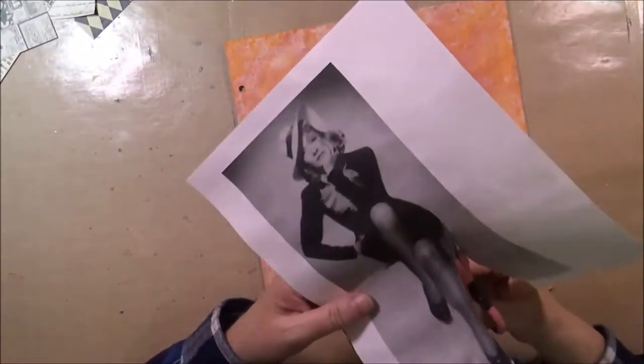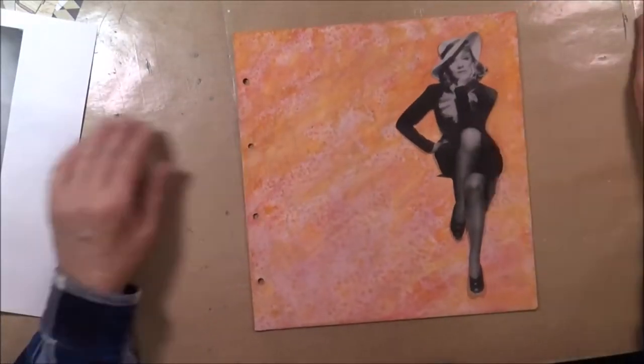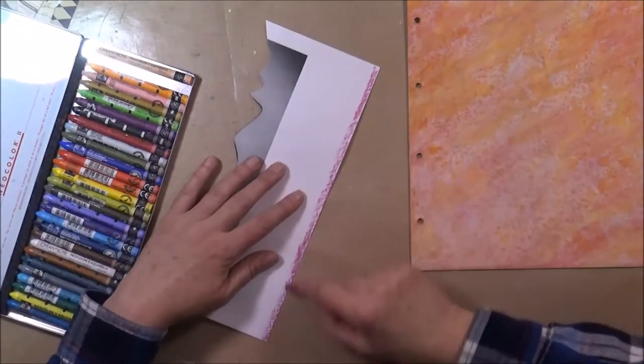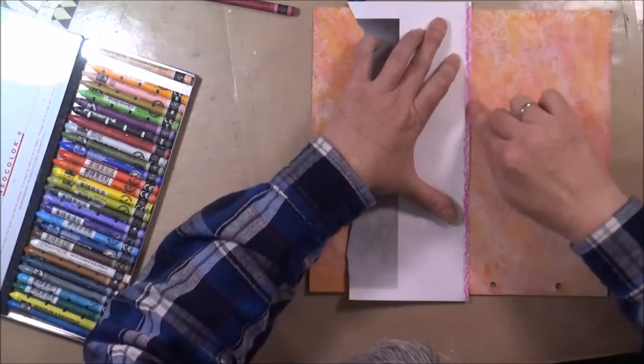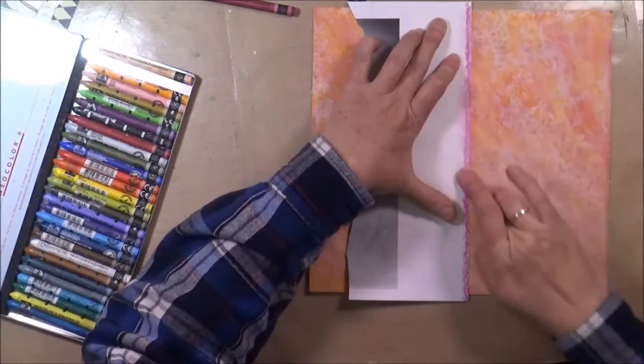Now, because the image is in a sitting position, I will give her something to sit on. So I use the leftover paper and just my neocolor, and I make a little fuzzy line here so she can sit down.